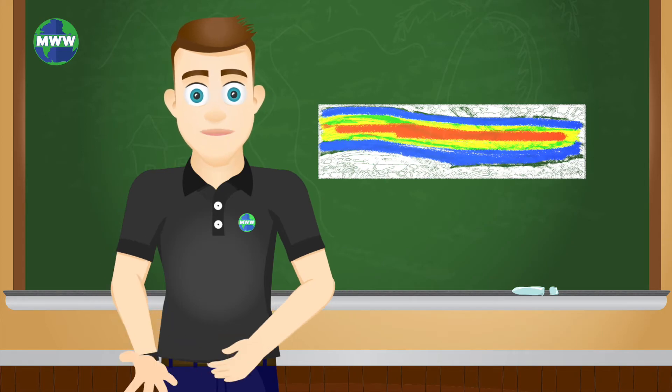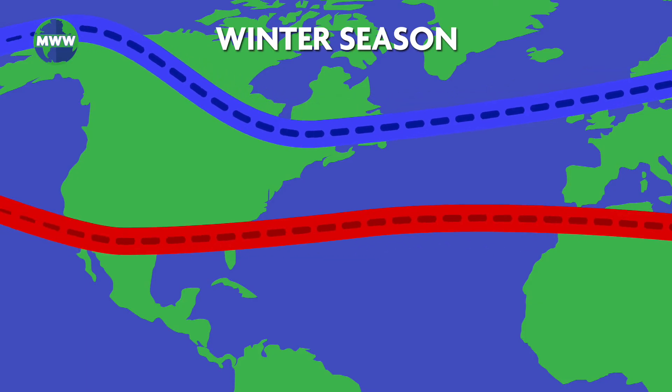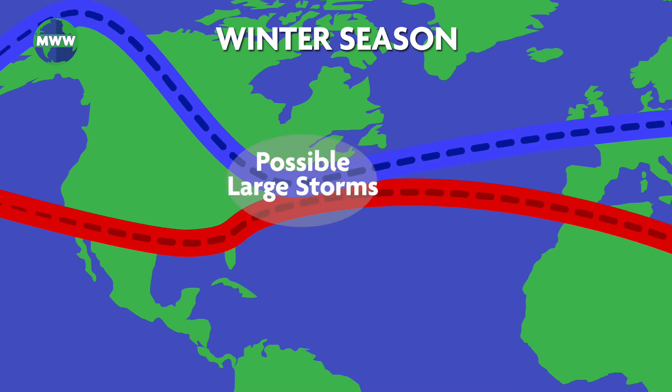Wind speeds increase toward a central core. The Polar Jet is strongest in the winter, where it can sometimes merge with the subtropical jet.